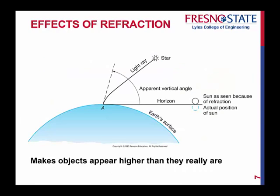Now refraction — that's something else we have to take into account. Refraction makes objects appear higher than they really are. As light rays come in, they actually bend toward the Earth due to refraction. Because of the bending, we see an apparent vertical angle — we'd assume the star is really at one position, when in reality it's elsewhere due to refraction of light. You can also see this at the point when the sun gets below the horizon — we still see the sun above the horizon, and that's again due to refraction.